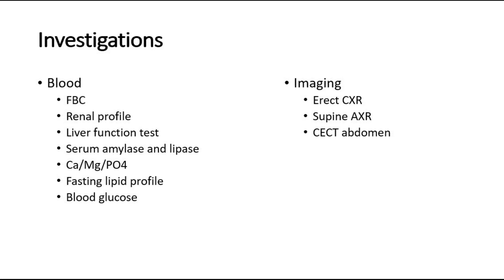The investigations for suspected acute pancreatitis include blood investigations and imaging. Full blood count may show elevated white cell count, which is associated with worse prognosis. Renal profile and creatinine to check for electrolyte imbalance, as patients may have vomiting. Liver function test to look at liver enzymes and albumin. Serum amylase and lipase are significant — amylase is significant when the level is more than three times the normal upper limit. Calcium, magnesium, phosphate, and fasting lipid profile to look for risk factors like hypercalcemia and hyperlipidemia.